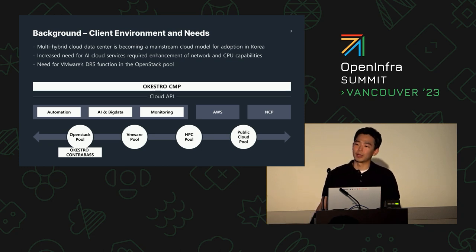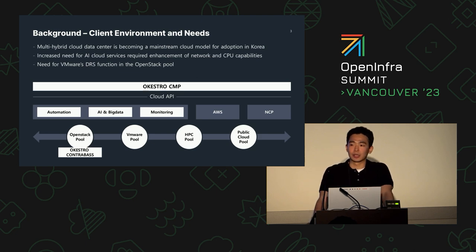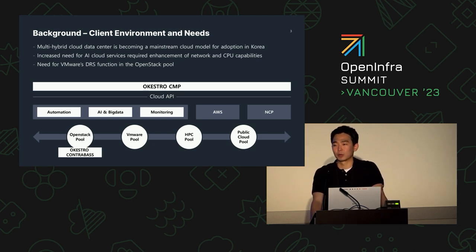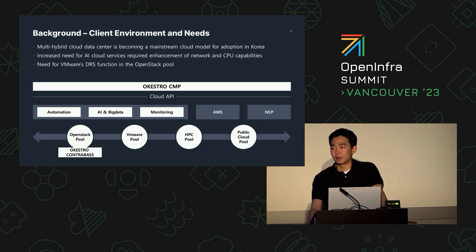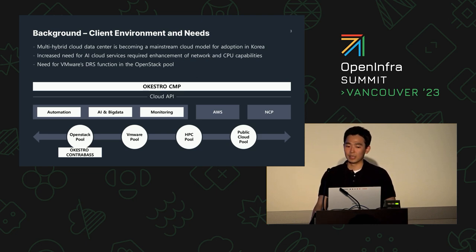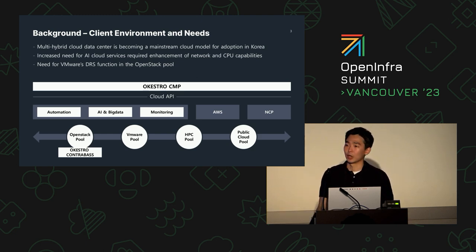In Korea, there's a big trend of adopting multi-hybrid cloud models. These data centers are very large — they're located in different regions and need to be connected so they're utilized together. Two specific challenges we're addressing today: first, the increased need for AI cloud services requiring enhanced network capabilities and CPU performance; and second, mimicking VMware's DRS function in the OpenStack pool.